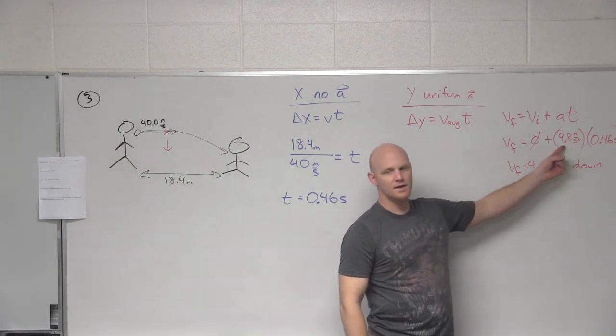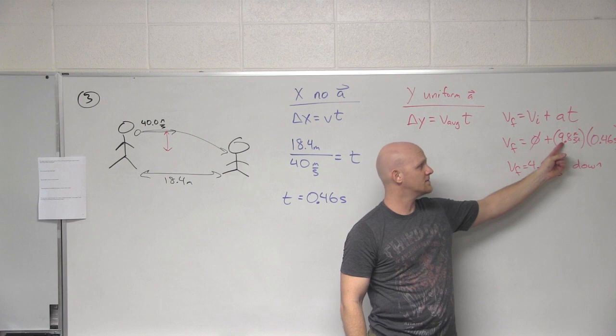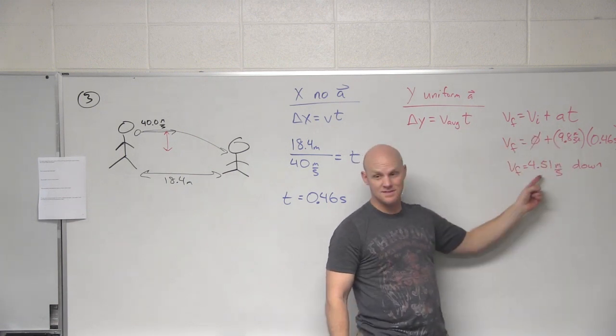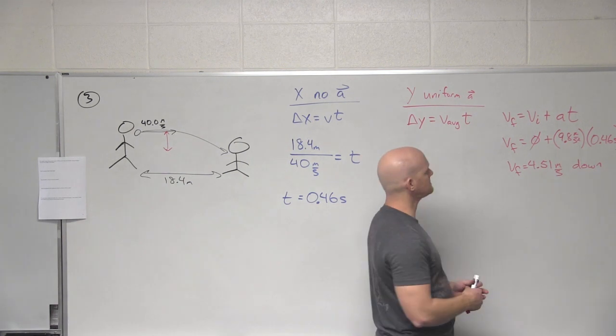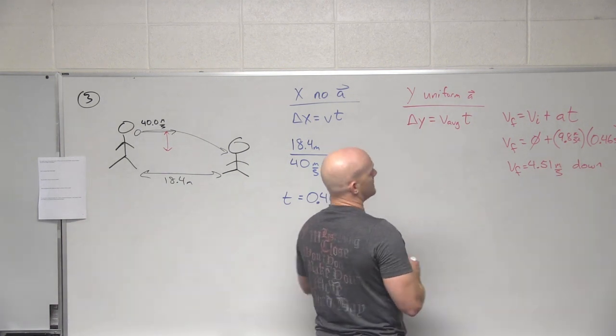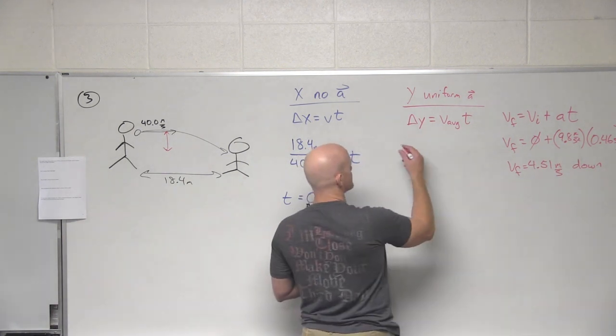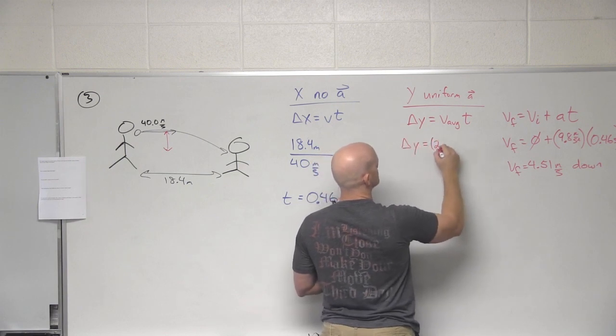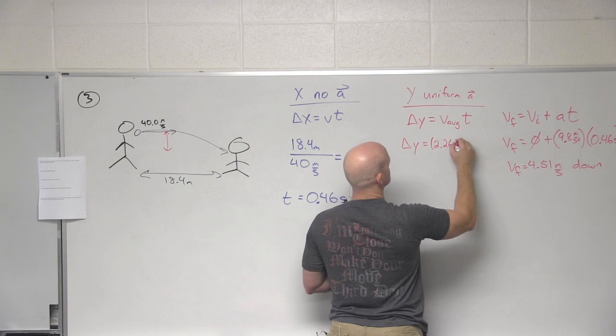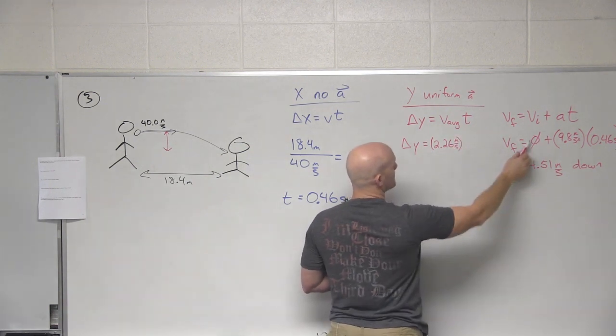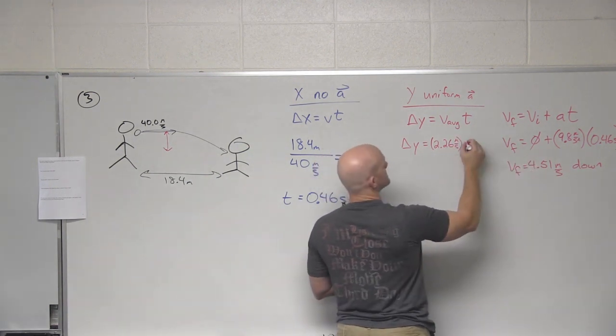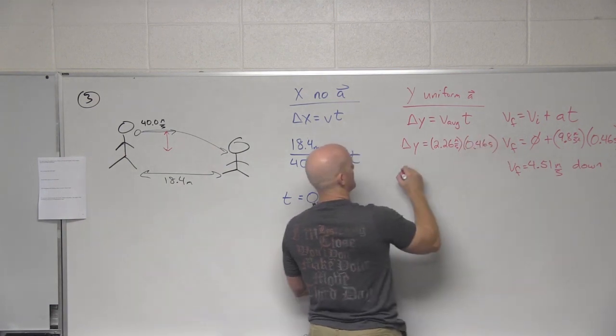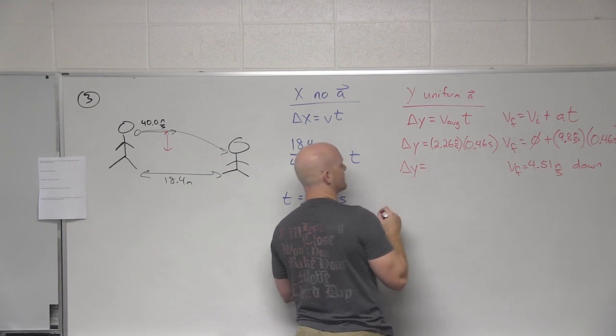And which direction is that point? Down. So notice, I didn't worry about making the gravity negative, because I knew that the velocity in the entire time was also going to point down. I just have to realize that this points down. Okay. So what's our average velocity going to be then for this journey? 2.26. Yeah. 4.51 and 0 average is 2.26-ish times 0.46 seconds. And what is our horizontal displacement?